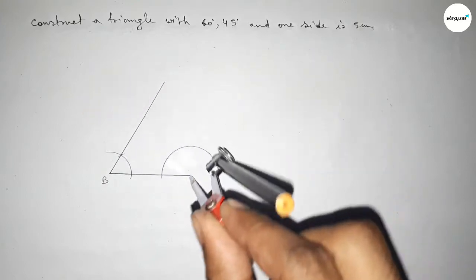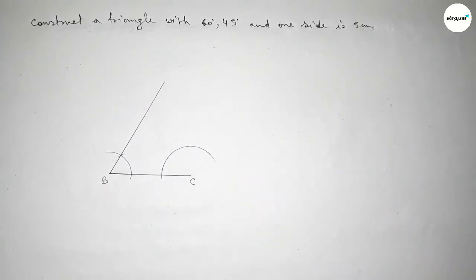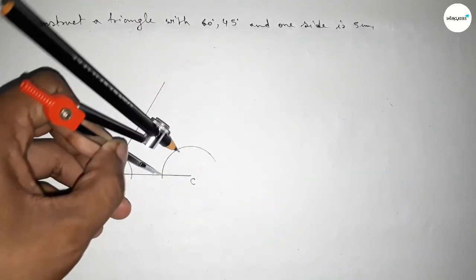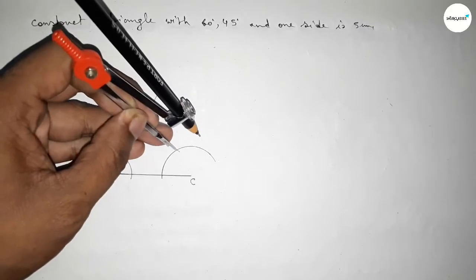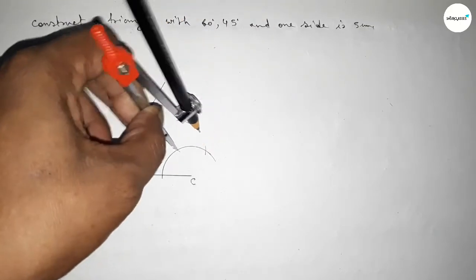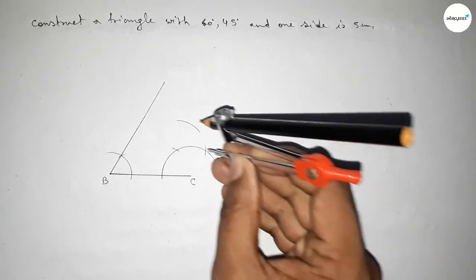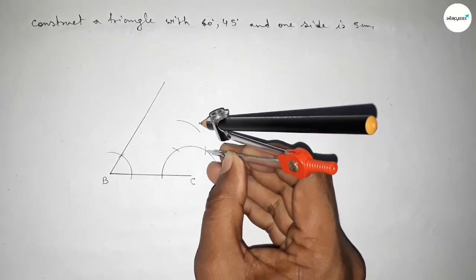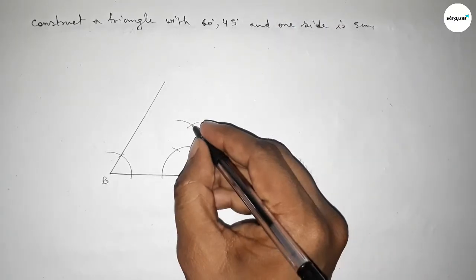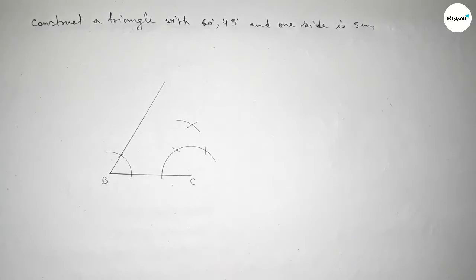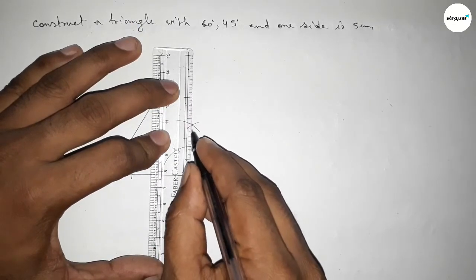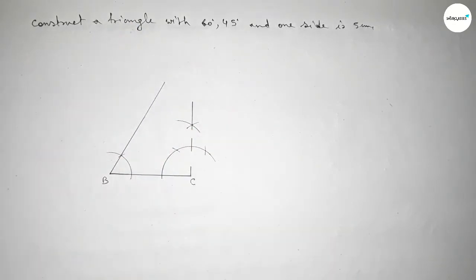Now drawing a 45 degree angle on point C. Drawing an arc on point C, putting the compass with the same length and cutting, then cutting again with the same length and drawing another arc — both curves intersect at a point. Joining this gives a 90 degree angle first.